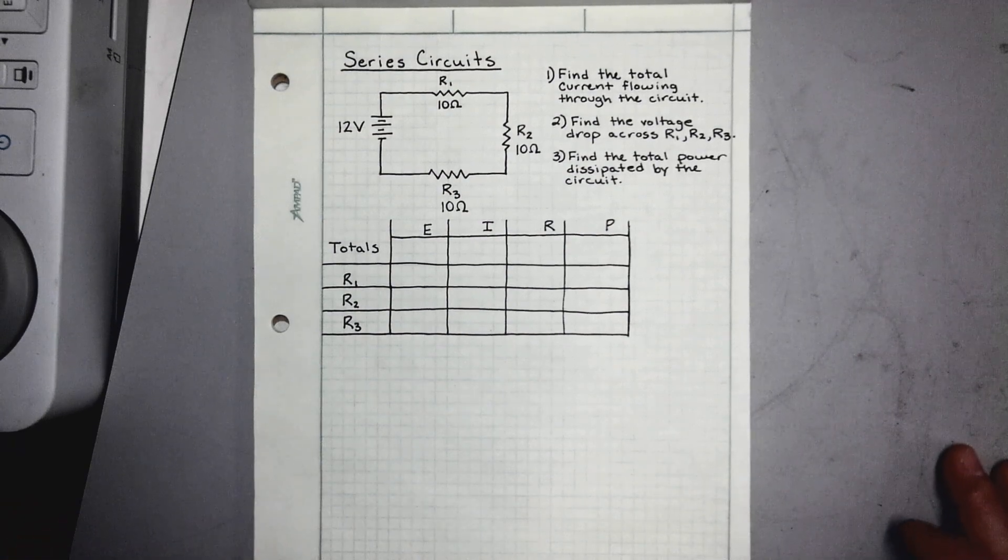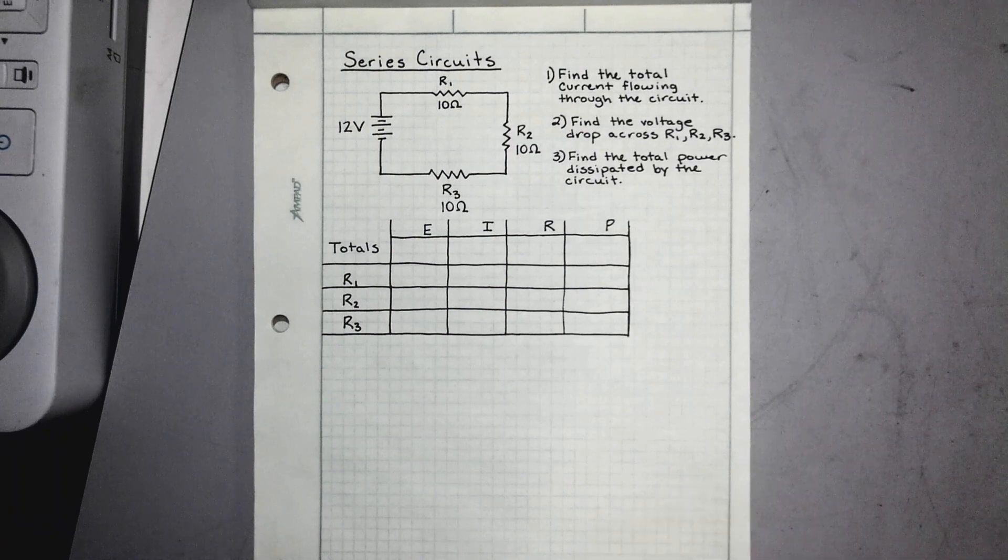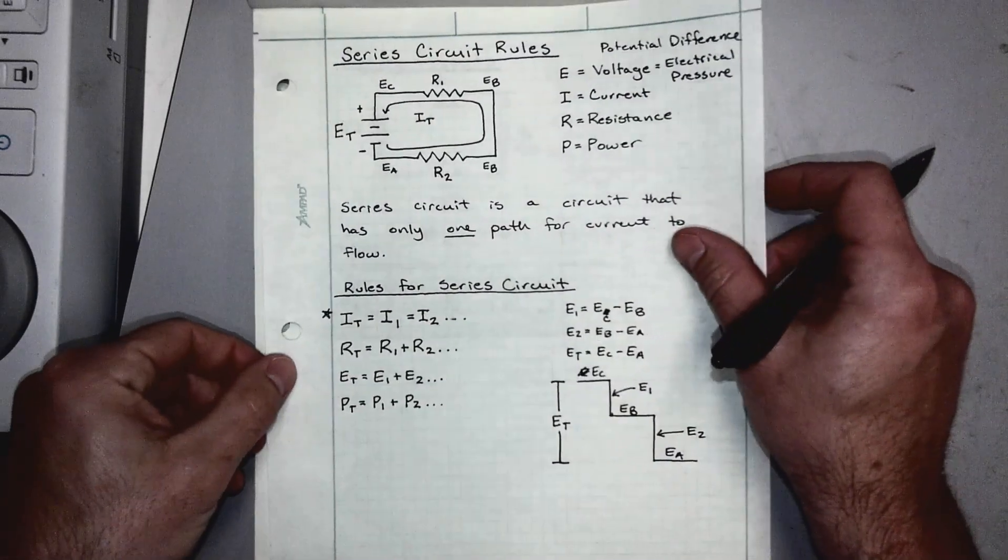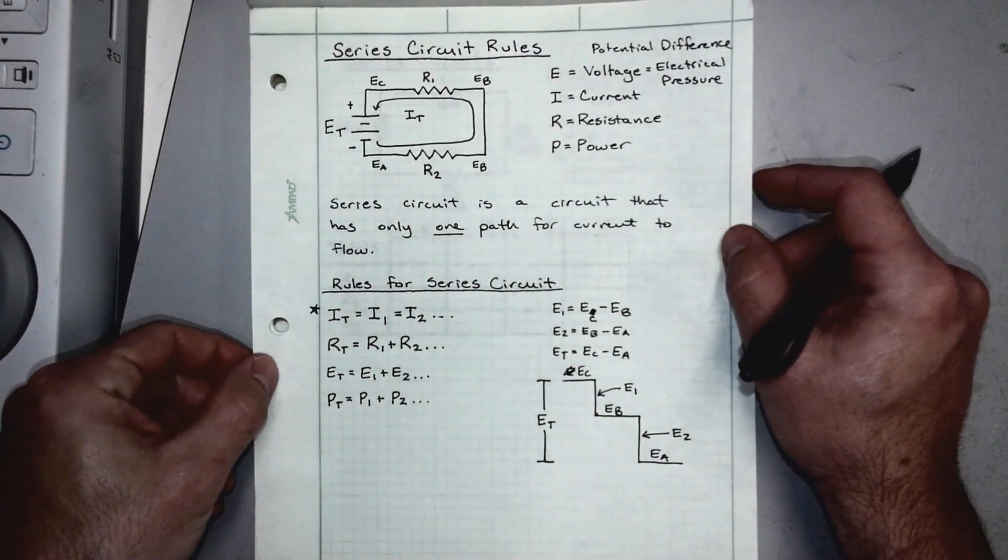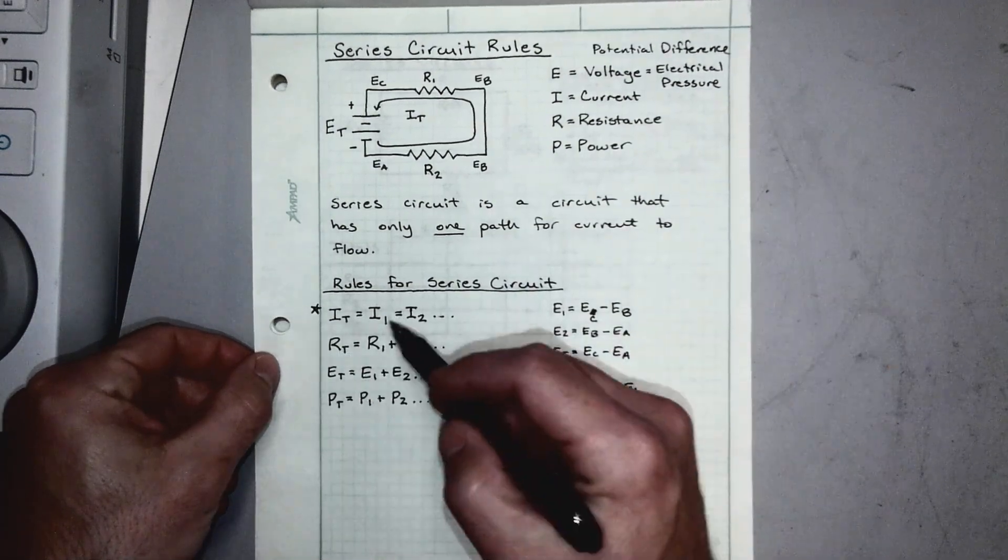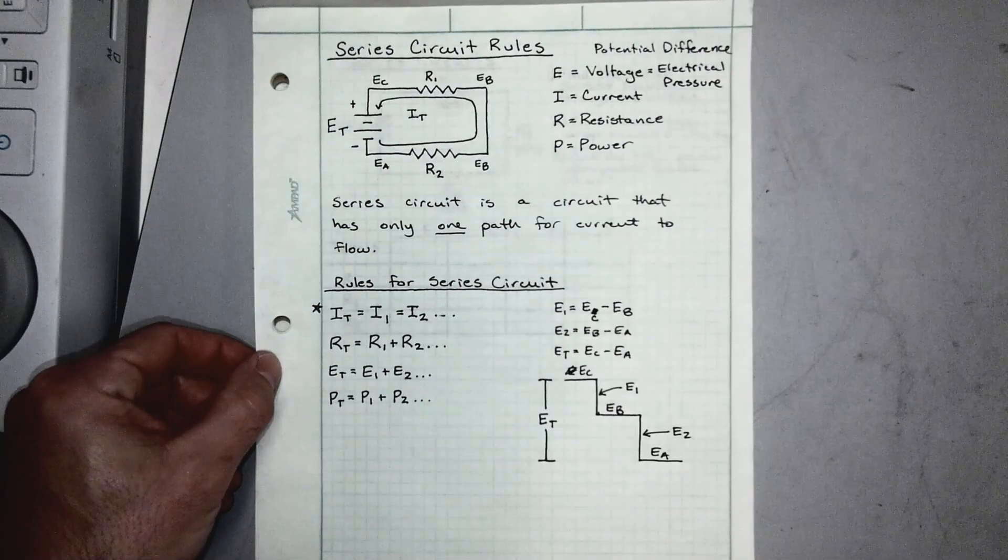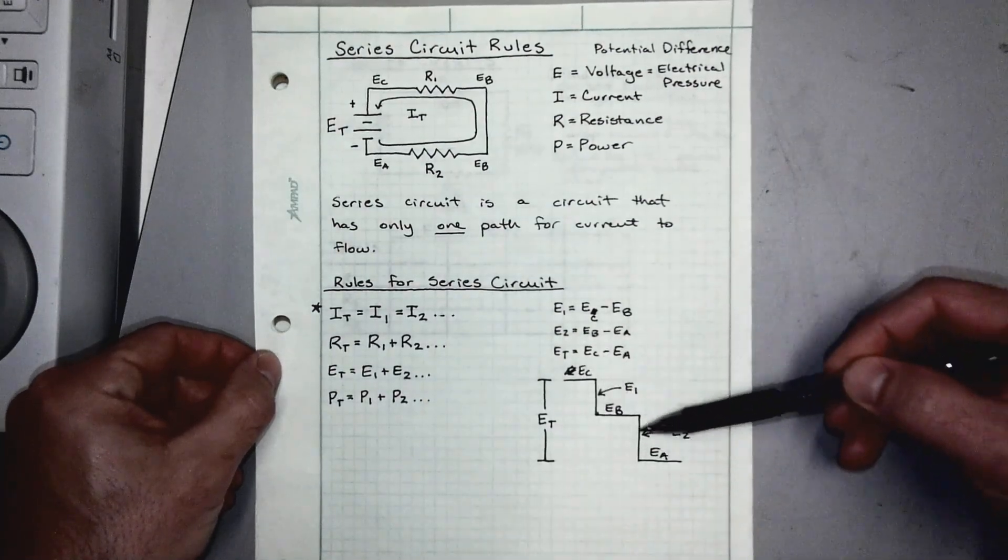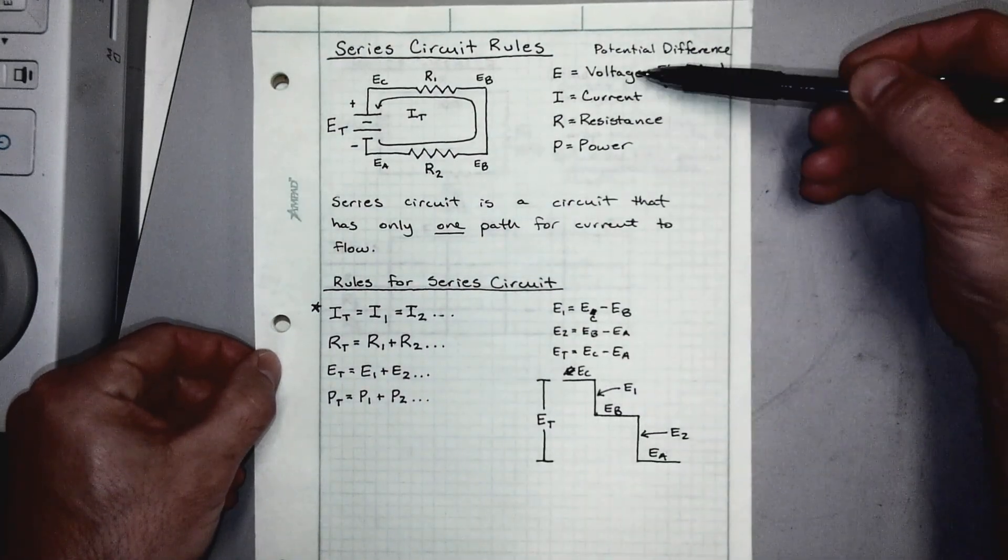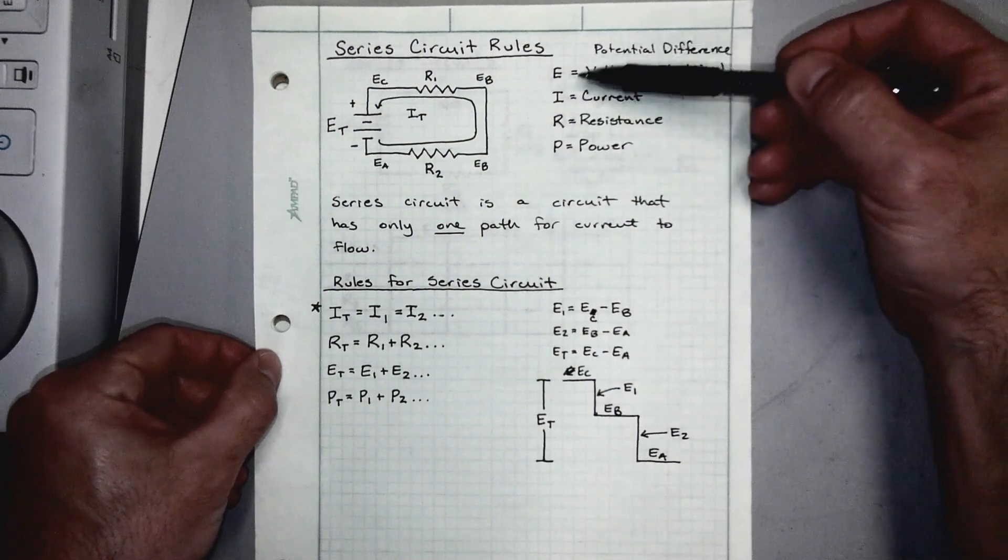All right, in the last video we covered series circuits and the rules around those. If you remember this sheet right here, we had our rules for series circuits. We defined a series circuit as a circuit having only one path for current to flow. We revisited voltage and our variables.